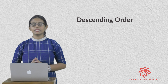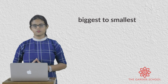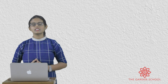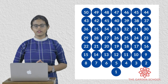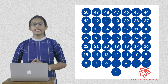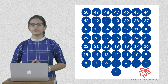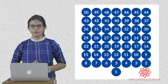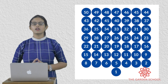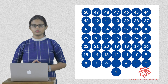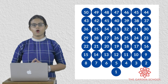So next is descending order — it is from biggest to smallest. Let's take the same example. Numbers from 50 to 1 — it is in descending order. We start with 50, which is the biggest number, and we end with number 1, which is the smallest number. So descending order is the order from biggest to smallest.